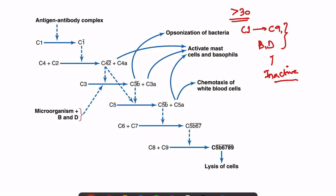This scheme represents the sequence of activation of the complement proteins. C1 gets activated (indicated by a bar on top), then activated C1 activates C4 and C2, cleaving C4 into two products: C4B and C4A. C4B combines with C2 to form the activated component C4̄2̄, which then activates C3 into C3B and C3A.